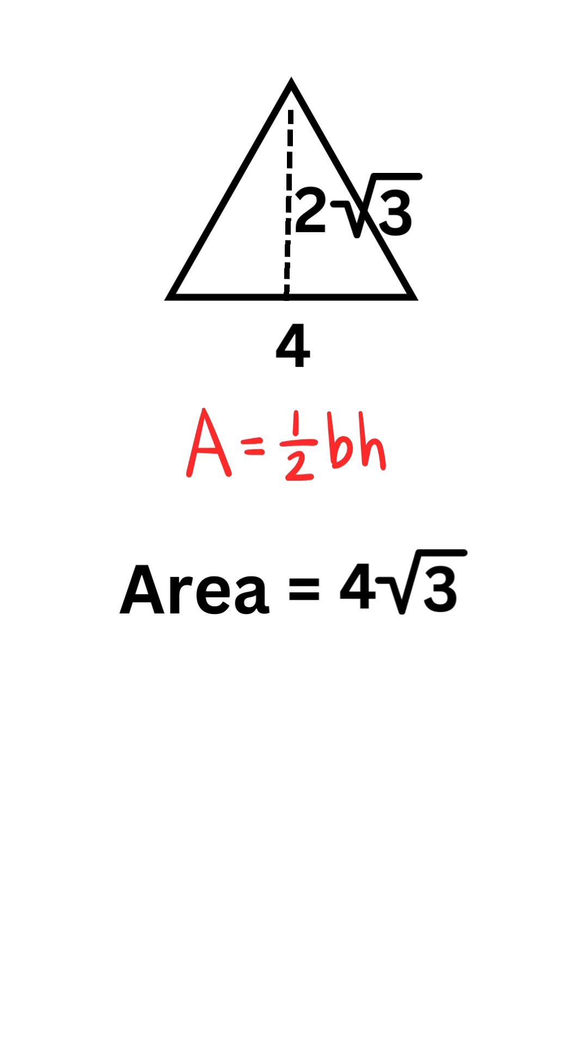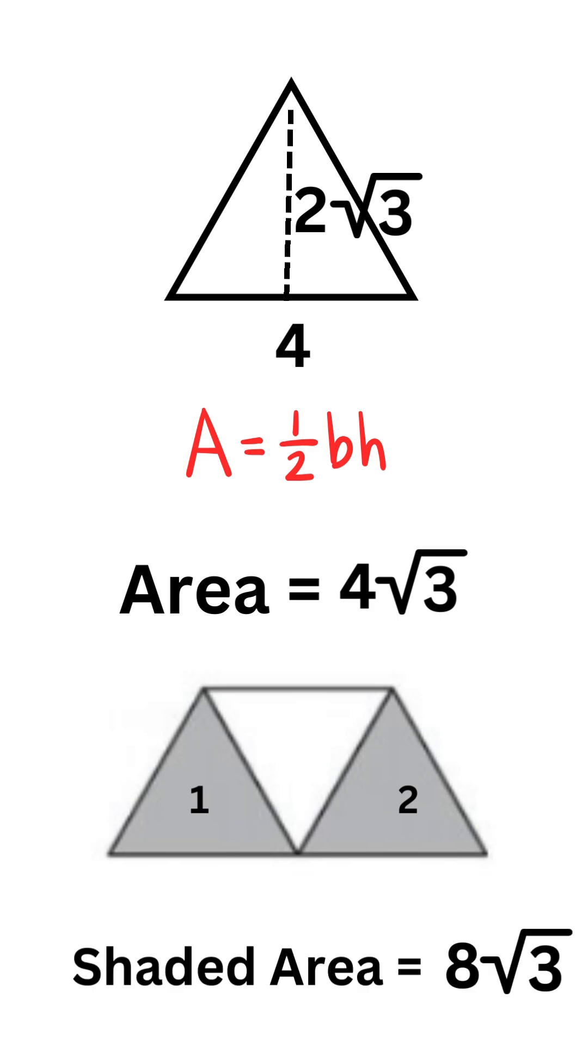And we know in this case here that we have two of the triangles are shaded. So we're going to multiply that by 2. So we would get our answer of 8 root 3.